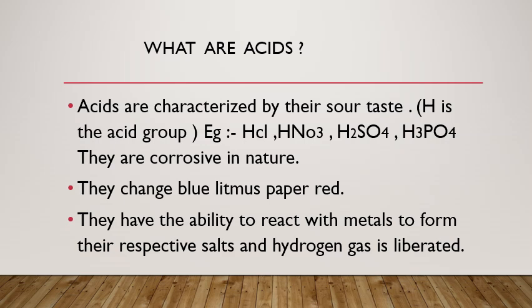In HNO3, that is nitric acid, you will find H which is the acid group. Next is H2SO4, that is sulfuric acid, wherein you find H as the acid group. And even in phosphoric acid, that is H3PO4, you will find H which is the acid group. So H is the acid group — identifying an acid is the presence of H in its formula.